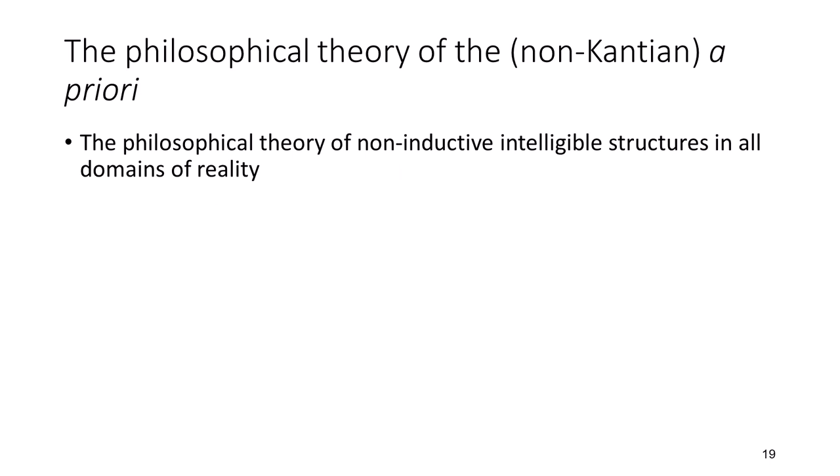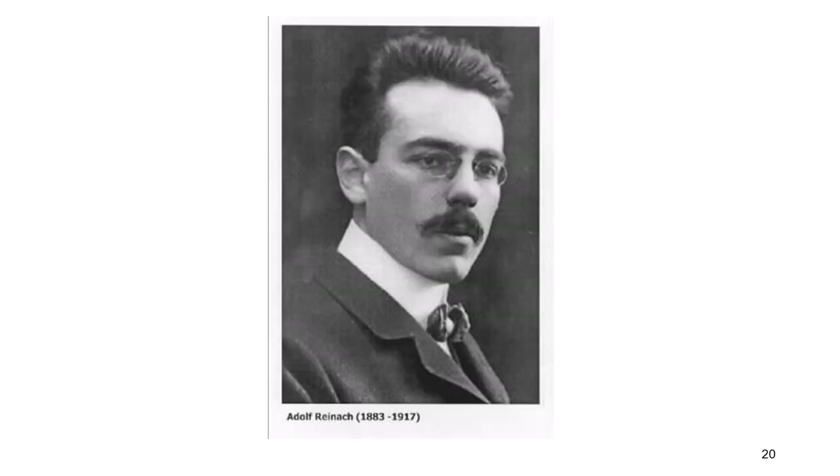Another term for these is 'non-inductive intelligible structures.' We know that every human is born virtually with the capability to apprehend and recognize non-inductive intelligible structures. Differences between colors can't be learned. Differences between shapes can't be learned. Differences between feeling good and feeling bad can't be learned. You grasp those things innately — they are intrinsically intelligible. As we get older, more and more of these intrinsically intelligible structures become evident to us.